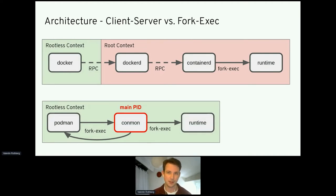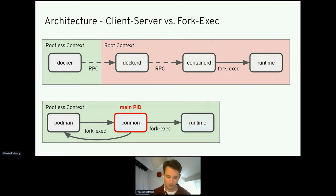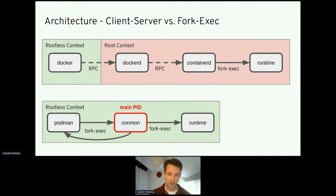With Podman it's simpler. We have Podman and conmon — short for container monitor — a very small tool written in C with an incredibly low memory footprint. Conmon keeps certain resources open like namespaces and file descriptors, exec's the runtime, and has a callback to Podman for cleanup. Conmon runs for the lifetime of the container, so it's the main PID in the systemd unit. Systemd knows the service is up and running, and conmon exits with the container's exit code — so restart policies just work.